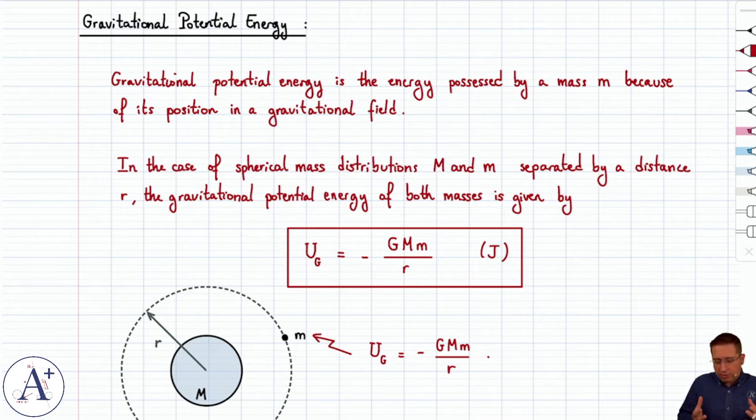It's just that we don't want to confuse the two. So when we talk about problems that deal with satellites and gravitation and planets and so forth, keep in mind that you're very likely going to be using the gravitational potential energy in this form, minus G big M little m over r.